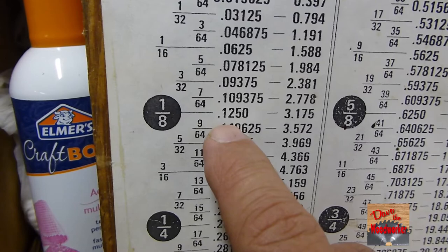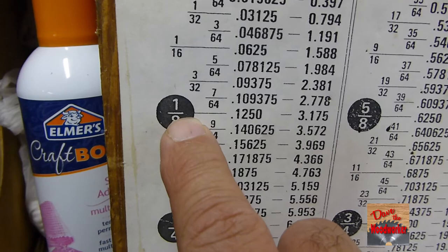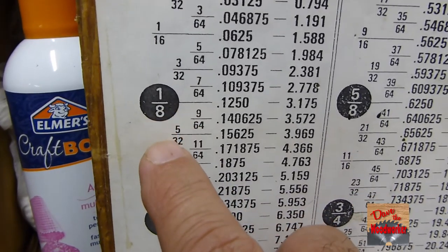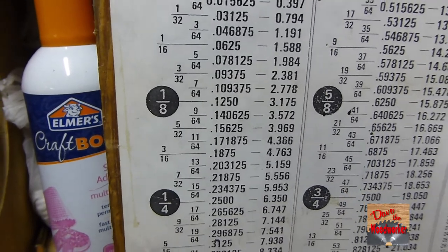If you measure something, it's one hundred and twenty-five thousandths, you know it's one eighth of an inch thick. So it's good to have a chart like this on hand when you're measuring stuff.